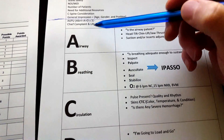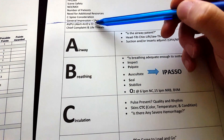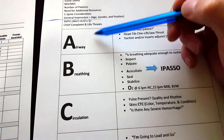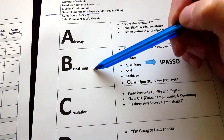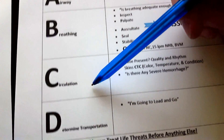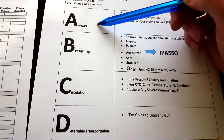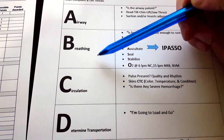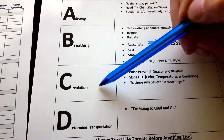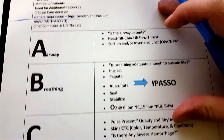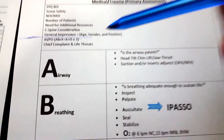After those two steps, just remember A, B, C, D: airway, breathing, circulation, and determine transportation. Let's break them down even more.